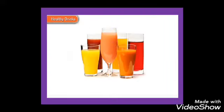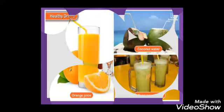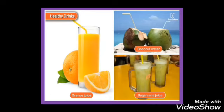During summer season we drink lots of fruit juices and sherbets like kokum, lemon, and amla. These sherbets make us feel energetic and fresh. We get orange juice from oranges and sugarcane juice from sugarcane stem. Most of you like to drink tender coconut water. We also give tender coconut water to sick people as it is a good source of several nutrients.